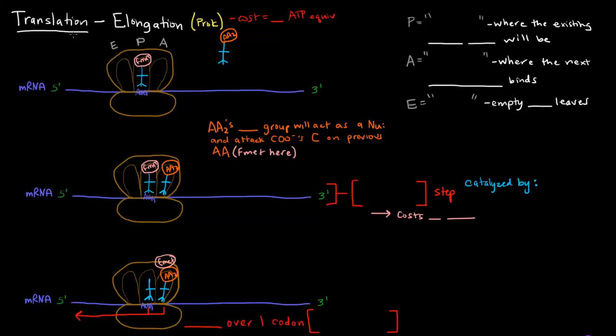Once translation has initiated, elongation can occur - elongation specifically of the polypeptide chain. After initiation, we have the formyl-methionine tRNA in the ribosome ready for elongation to occur.